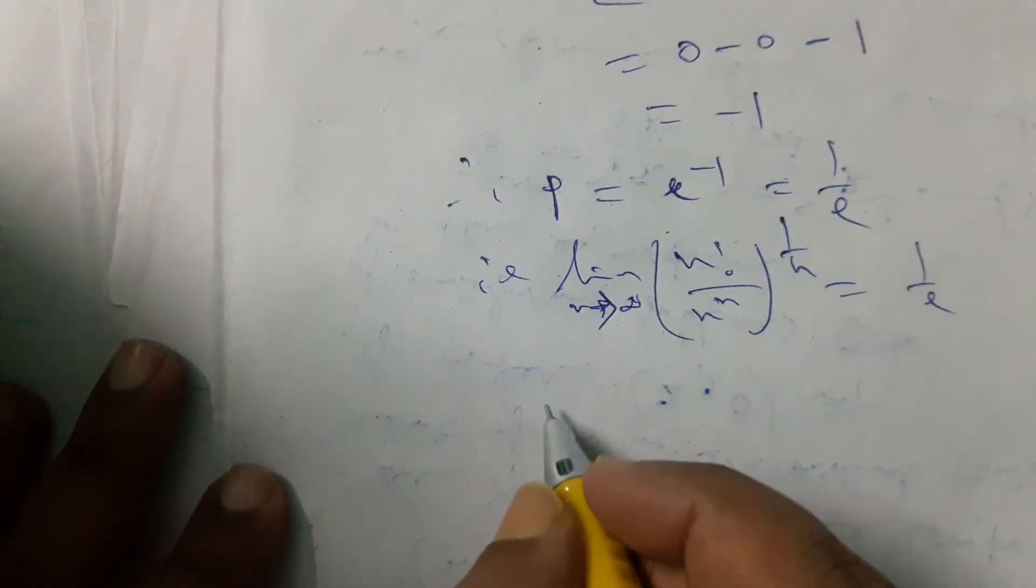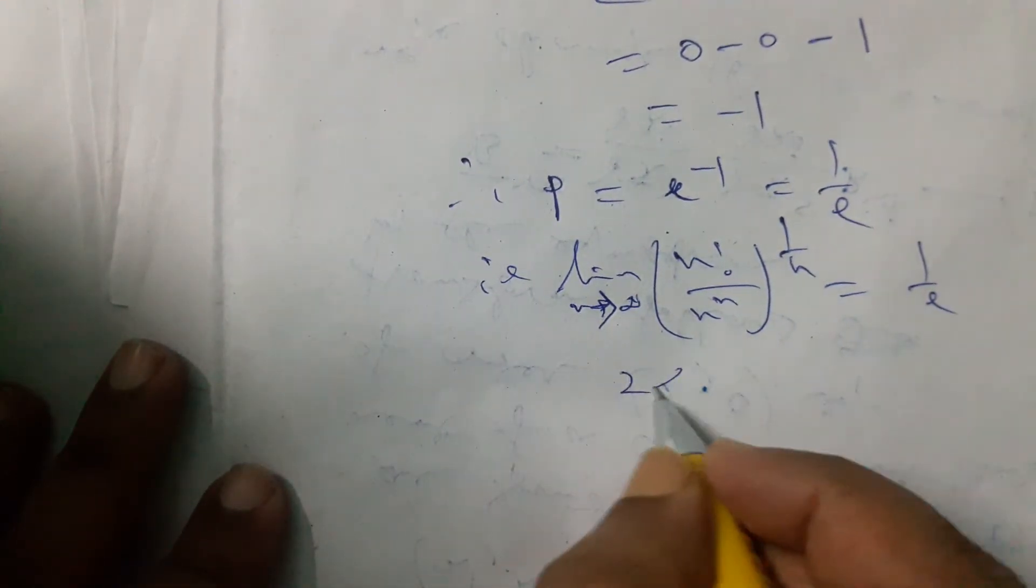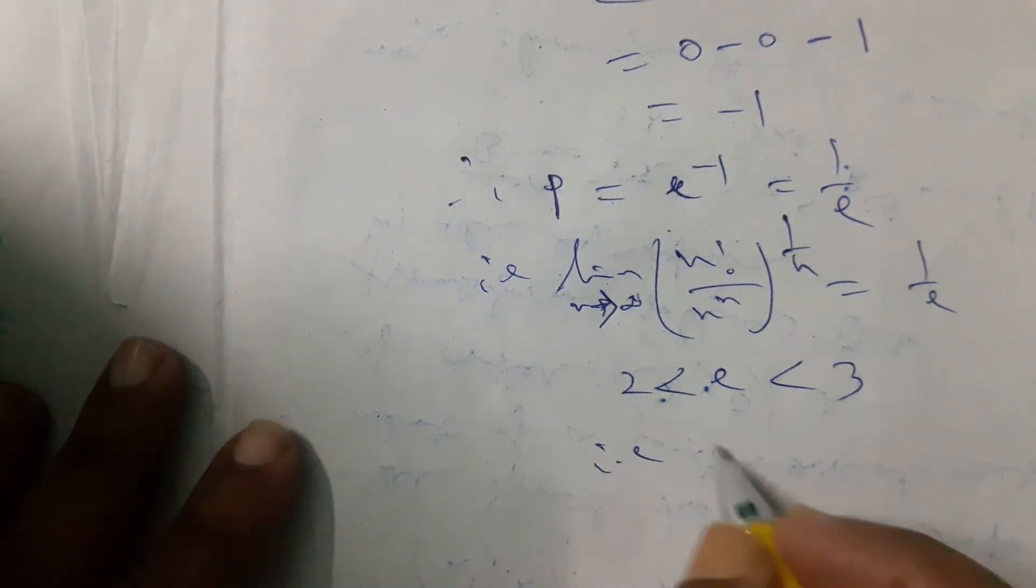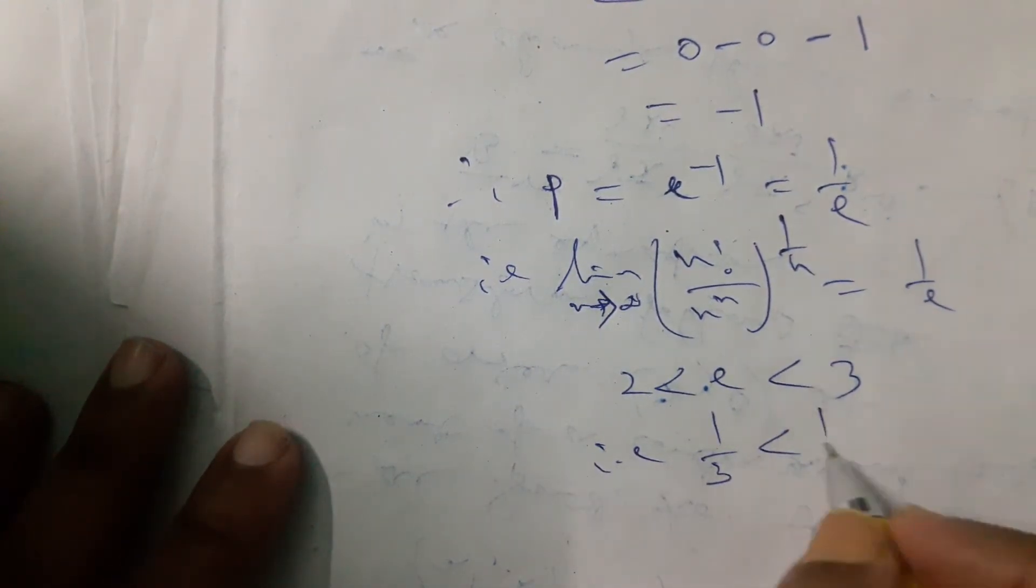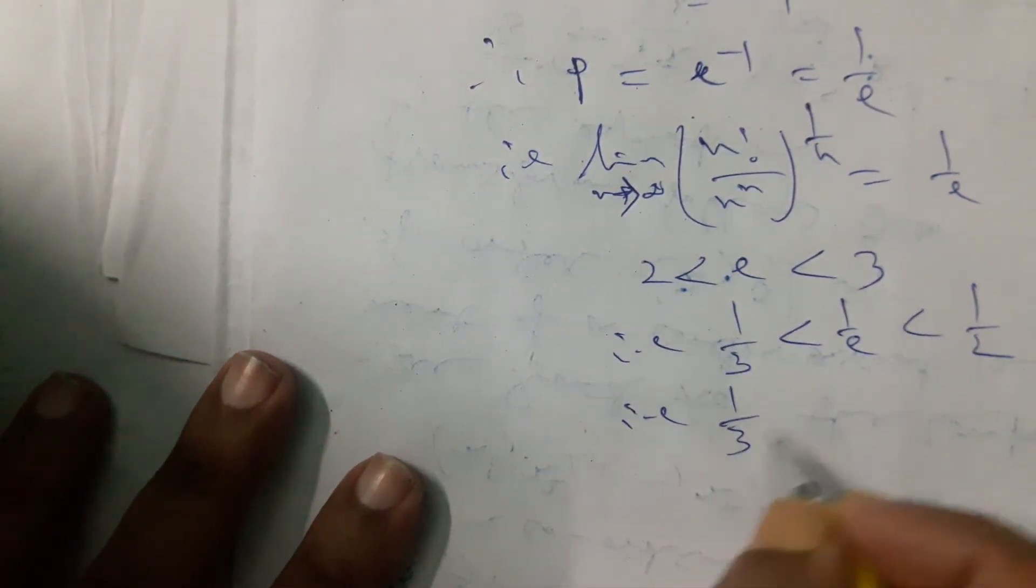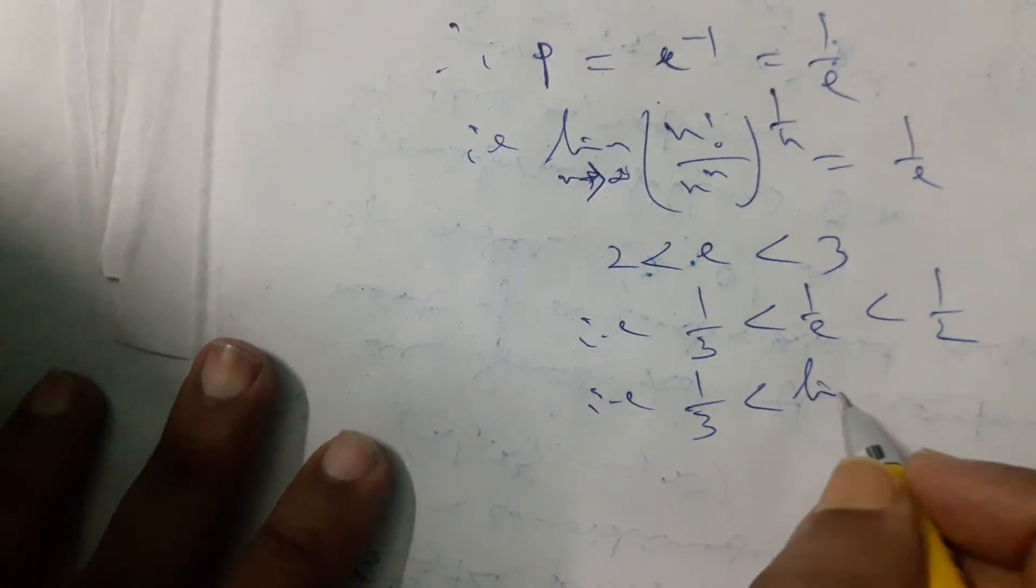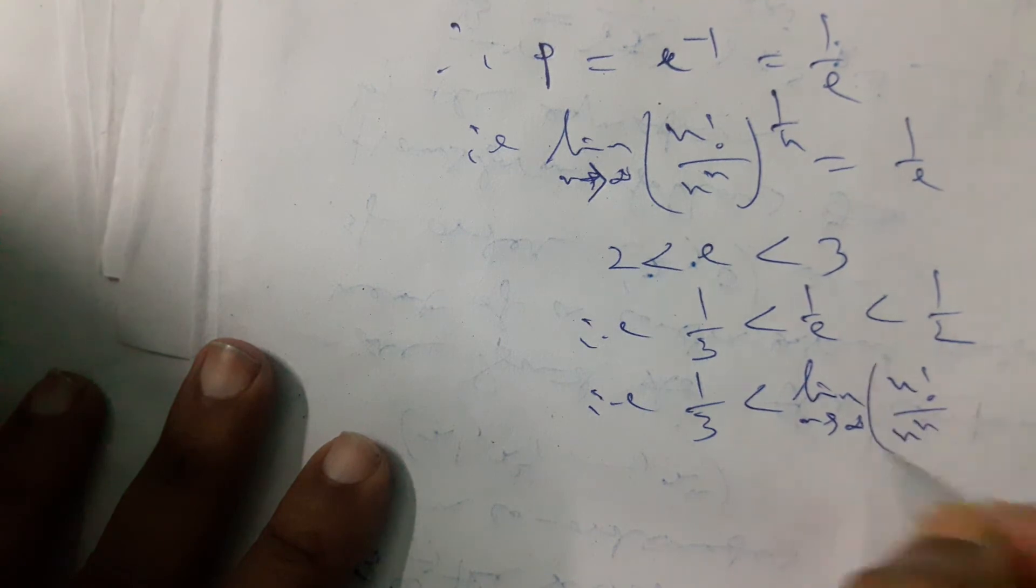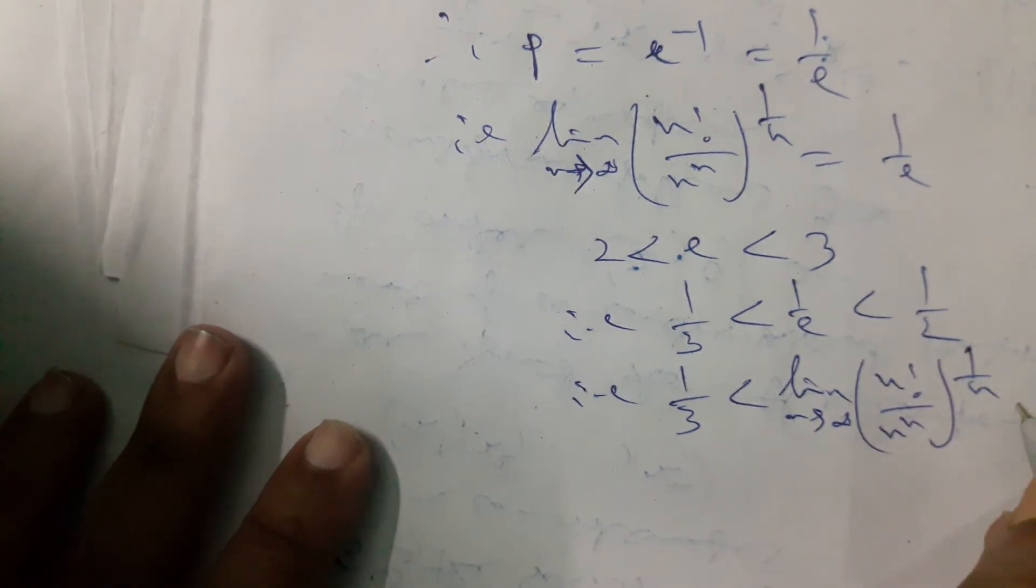Now we know 2 less than e less than 3. That is, 1 by 3 less than 1 by e less than 1 by 2. That is, 1 by 3 less than limit as n tends to infinity, n factorial by n to the power n, whole to the power 1 by n, less than 1 by 2.